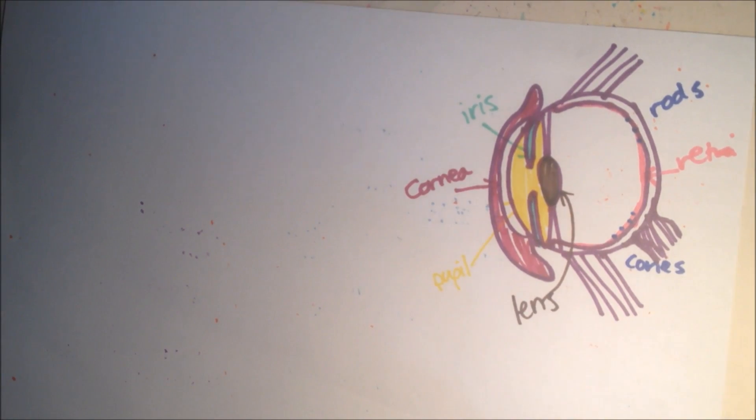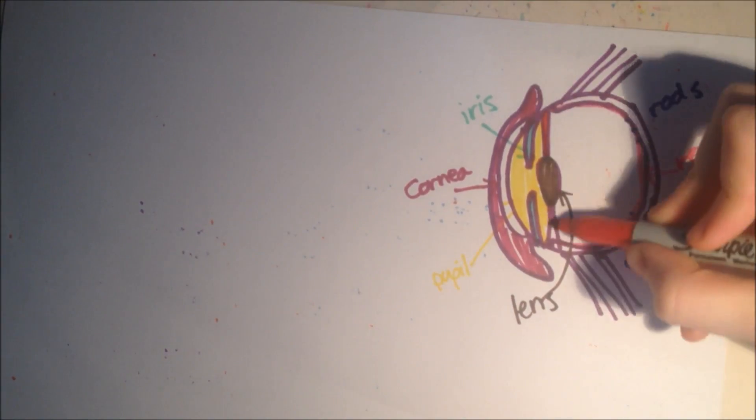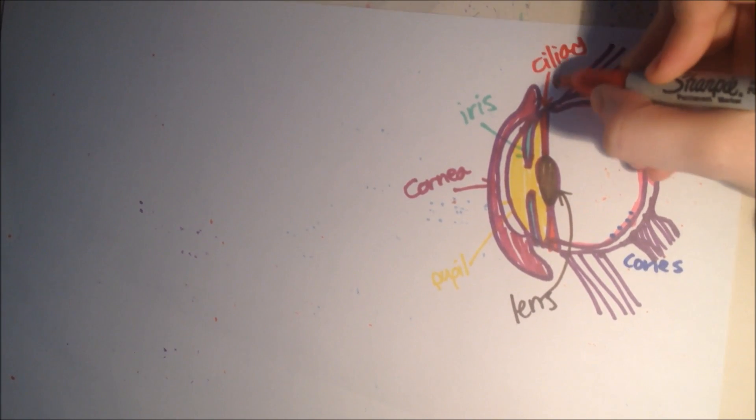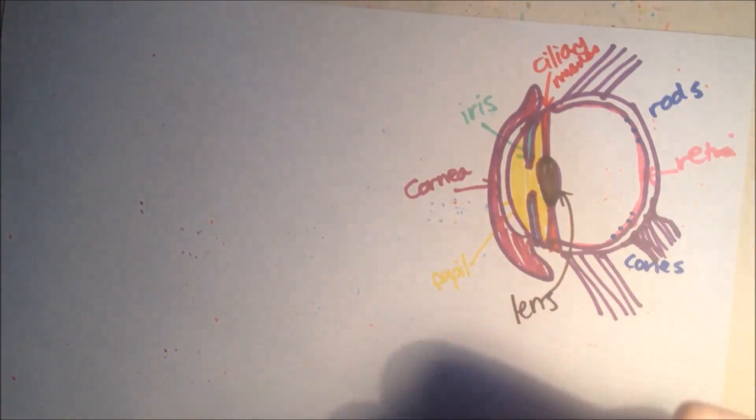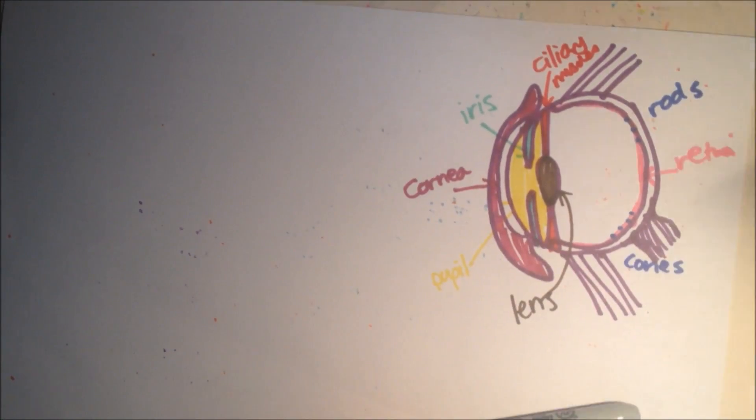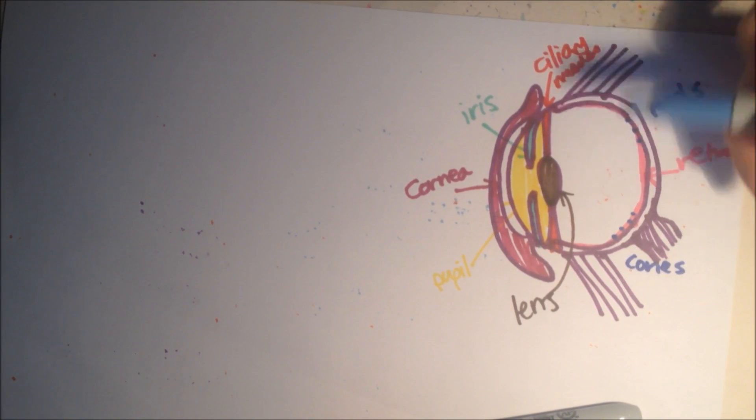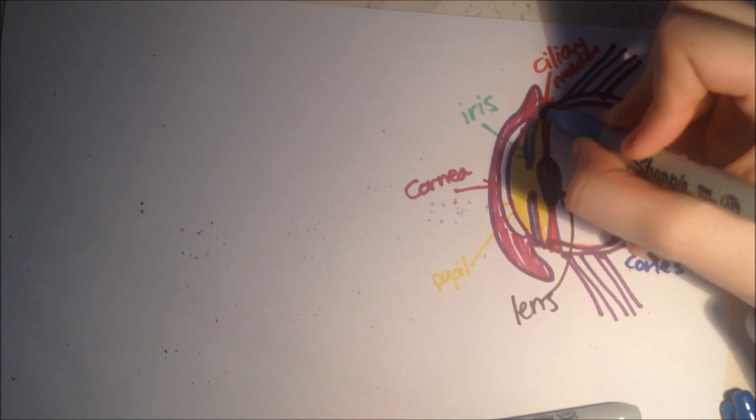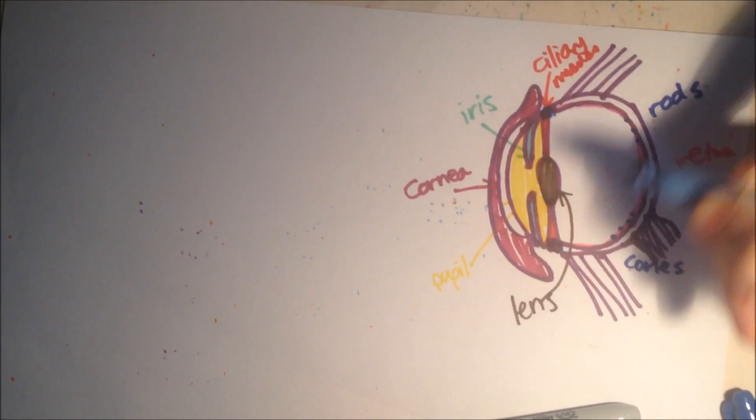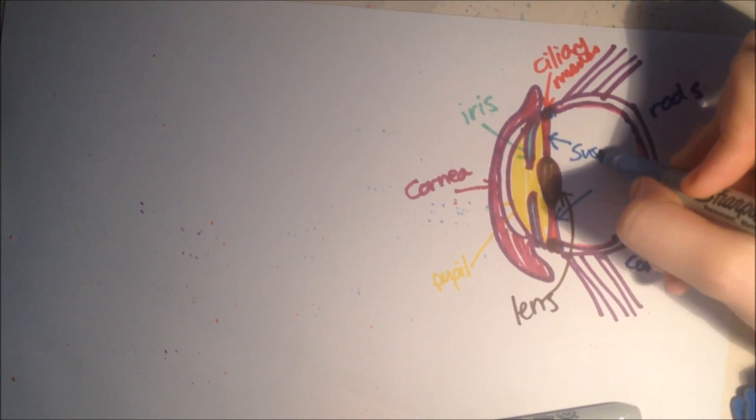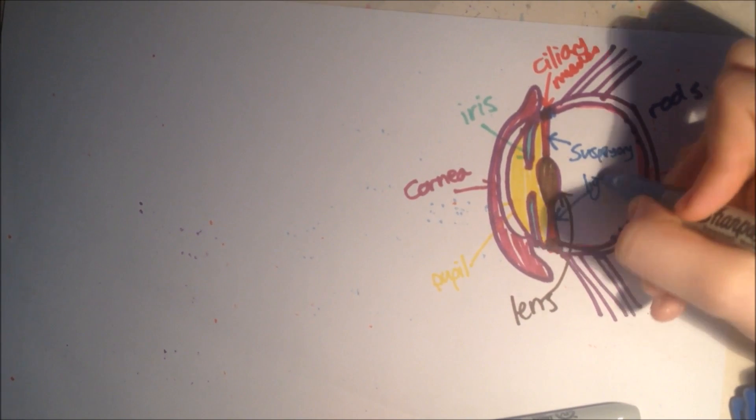And we also have these muscles here, which are ciliary muscles, which will be useful later. And the suspensory ligament. Oh wait. Oh sorry. The ciliary muscle is just on the edge here, just on the edge, whereas the suspensory ligaments are actually these ones. Sorry. So the suspensory ligaments are these big ones here, and the ciliary muscles are just on the edge here.